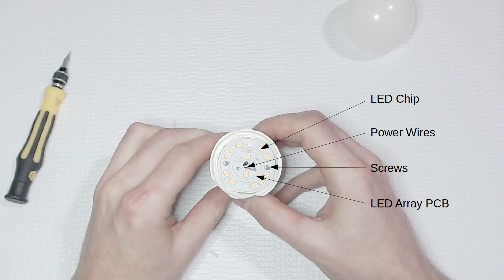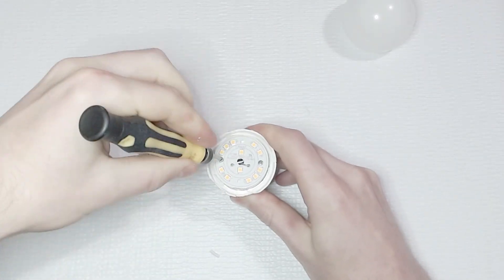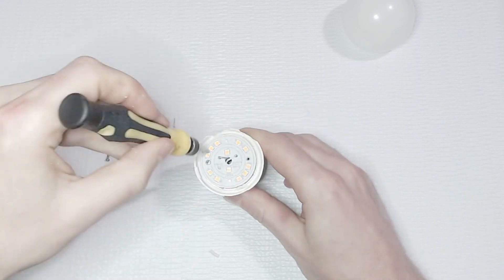Which contains LED chips, two power wires, and two screws. I remove the two screws securing the LED array PCB to the light body.